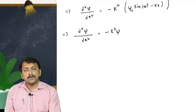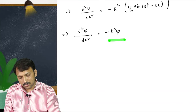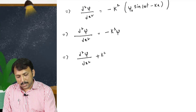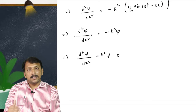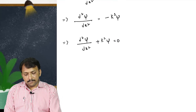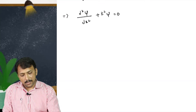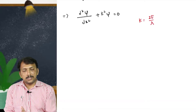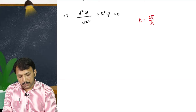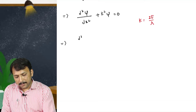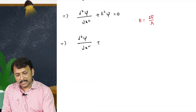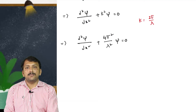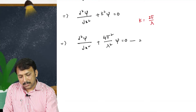Bringing the term to the left-hand side gives d²psi/dx² plus k²·psi equals 0. This is a second-order differential equation. Now substituting k equals 2·pi/lambda, we get d²psi/dx² plus (4·pi²/lambda²)·psi equals 0. We consider this as equation number 2.